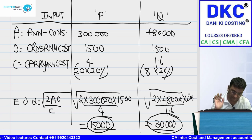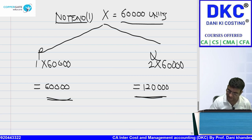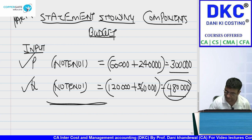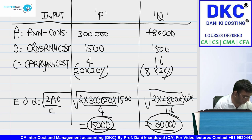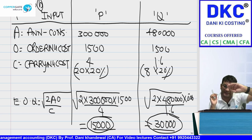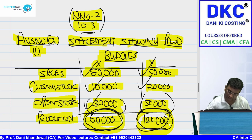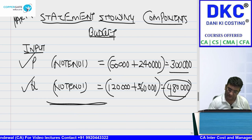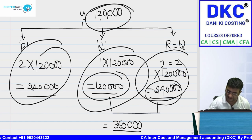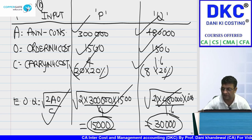Don't get confused — the first answer covers annual consumption and production; this is part A. The third part covers EOQ, which is answer number B. The flow is: sales, closing stock, opening stock → production → consumption → raw materials → annual purchase price and value.